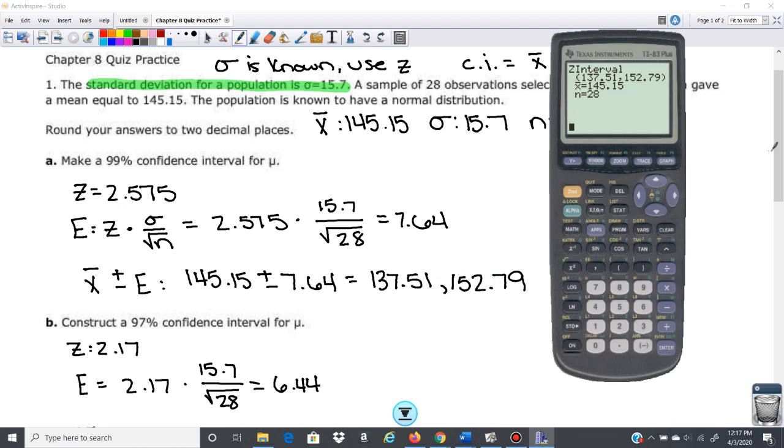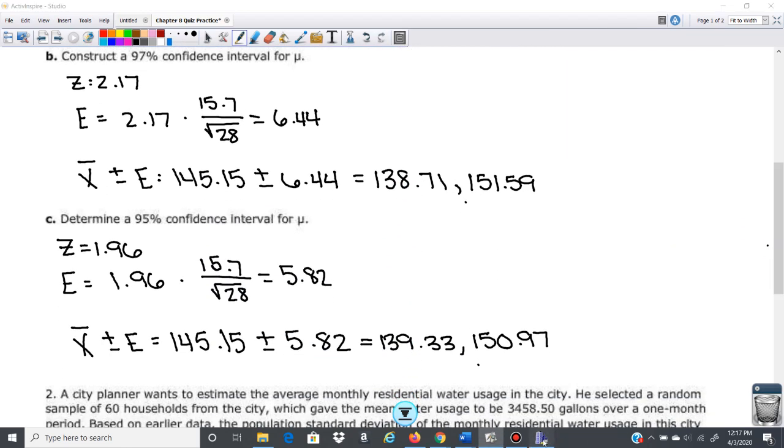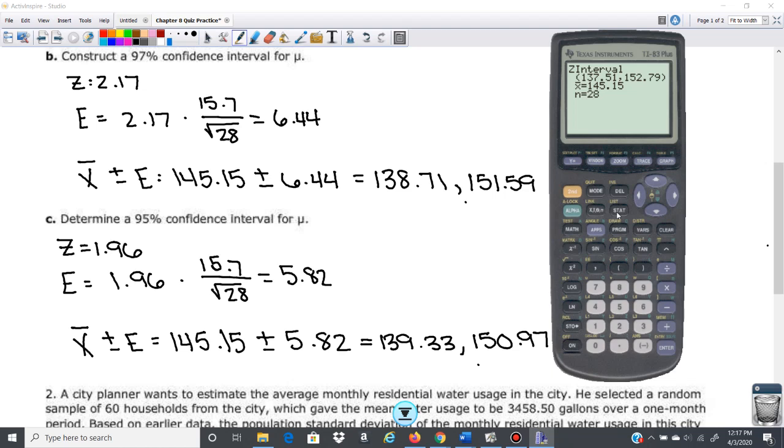So let's take a look at B and C as well. Everything here is the same, except we're changing the confidence interval. So if I go to stat tests, go to my Z interval here, everything stays the same. I just change the C level now to 0.97. Hit calculate. I get 138.71, 151.59.